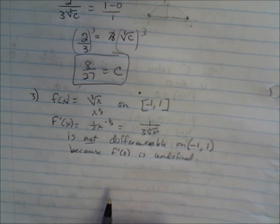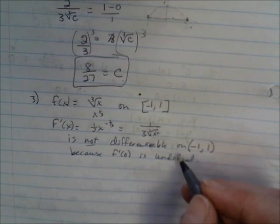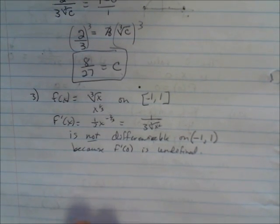So right there, we don't even go through the Mean Value Theorem, because if one of those two assumptions is not met, then we can't do it. So those are the steps that you have to take.